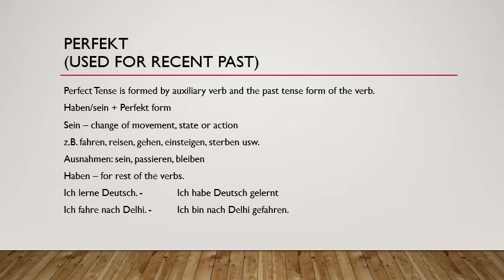Another example: 'Ich fahre nach Delhi' — I travel to Delhi. 'Fahren' shows a change in movement, so it takes 'sein' as the auxiliary verb. Conjugate 'sein' according to the subject 'ich', so: 'Ich bin nach Delhi gefahren.' 'Gefahren' is the past participle of 'fahren'. Always remember: 'sein' or 'haben' goes at the first or second place, and the past participle goes at the end.